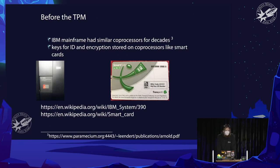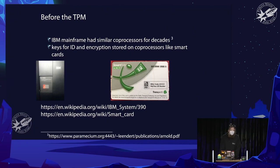Where did we come from historically? Even 30 years ago or earlier, IBM mainframes already had co-processors with interesting ideas around computing, mainly focused on business — IBM stood for International Business Machines. They had to think about trust establishment even then. There were also smart cards, which many people carry today for public transport, authentication, banking, and so on.